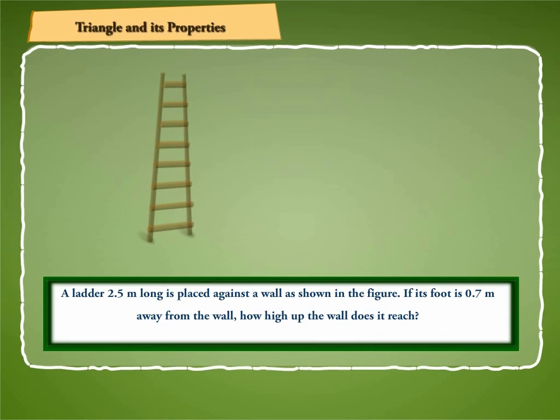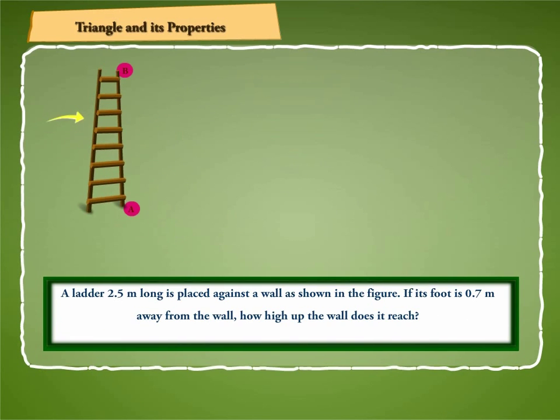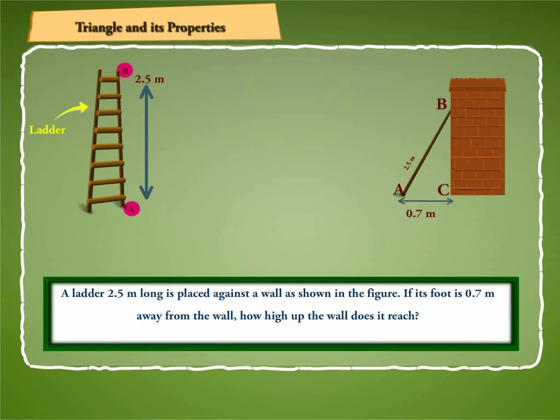In the given figure, let AB represent the ladder, whose part A is 0.7 meter away from the wall BC, which shows triangle ABC is a right-angled triangle, in which angle C is right-angle,